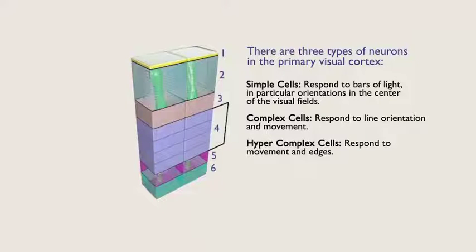Simple cells respond to bars of light in particular orientations in the center of the visual field. Complex cells respond to line orientation and movement, like movement of the soccer ball. Hypercomplex cells respond to movement and edges, like the location of the goal or the edge of the field.